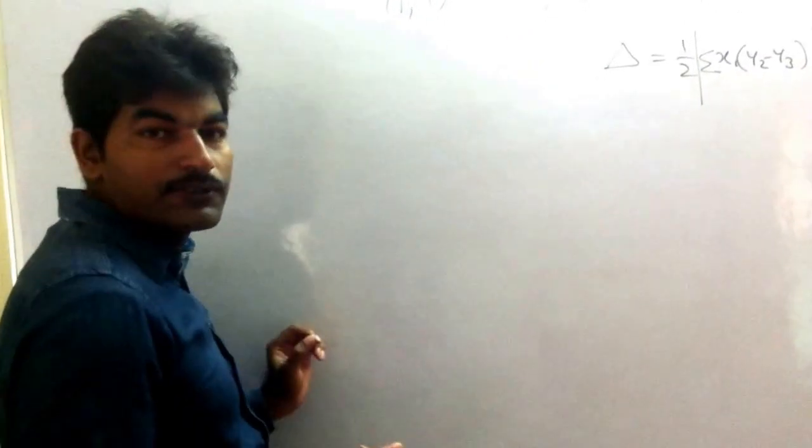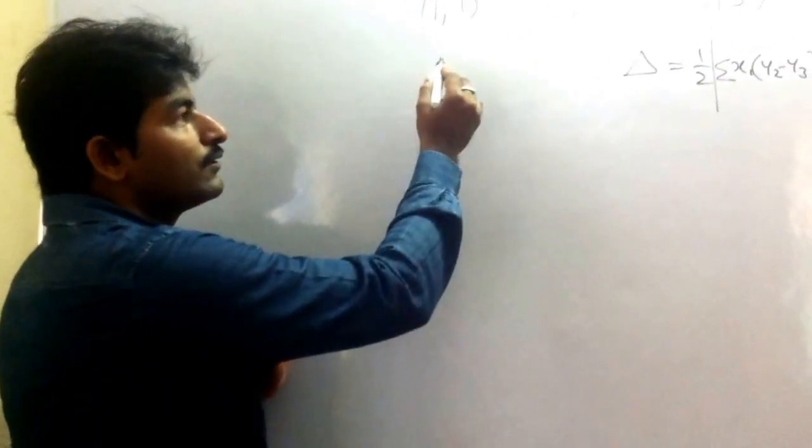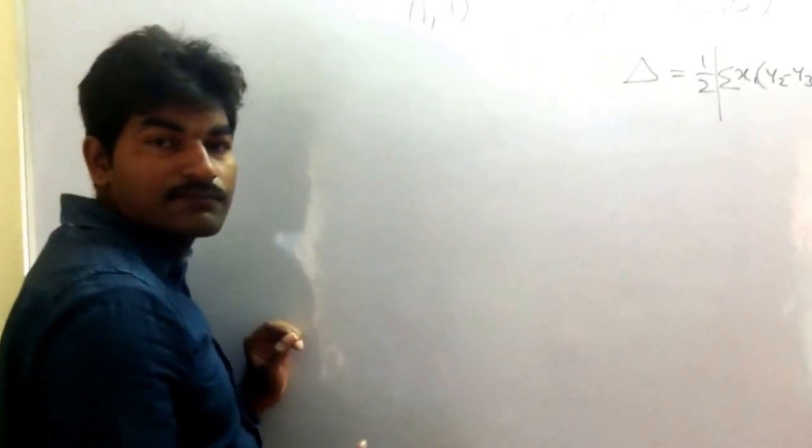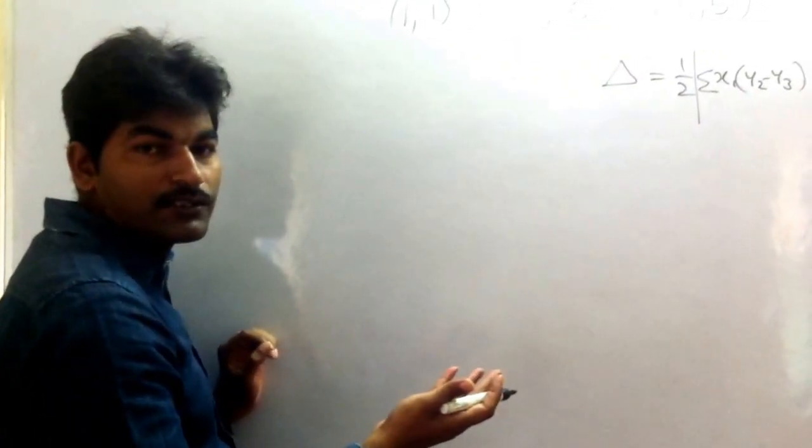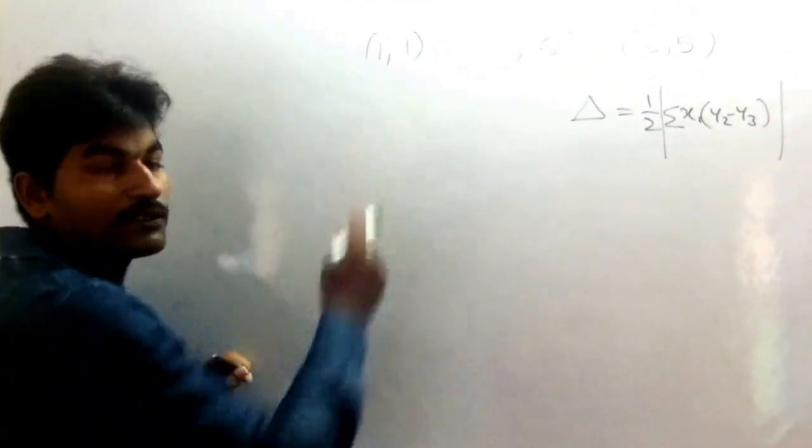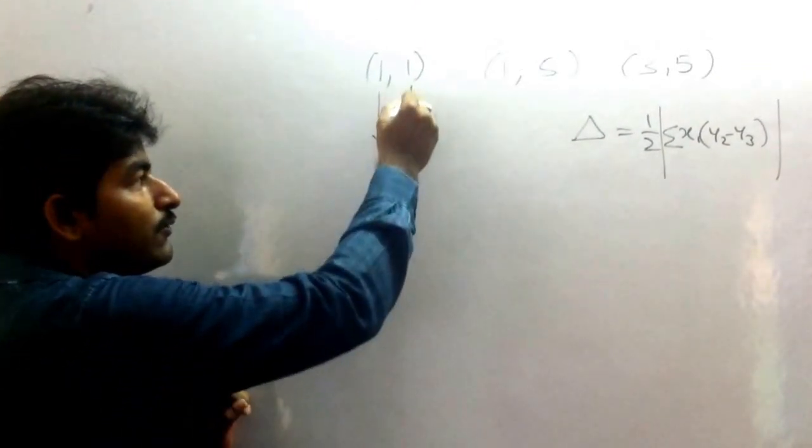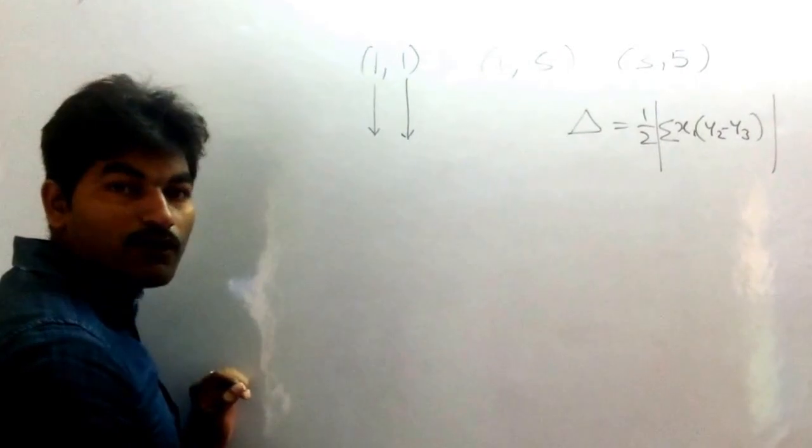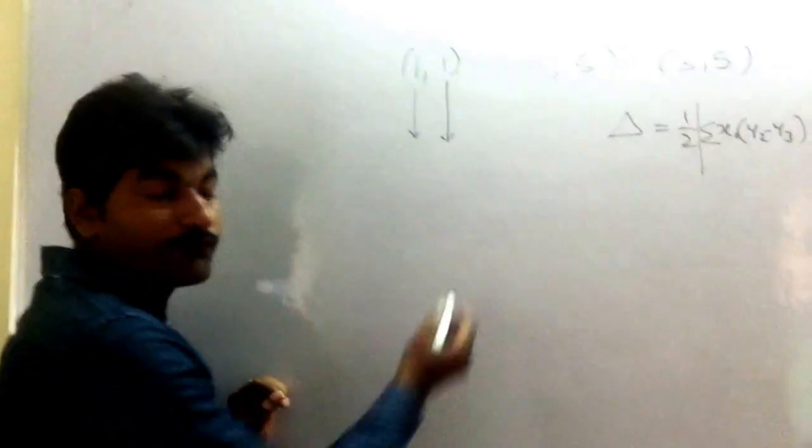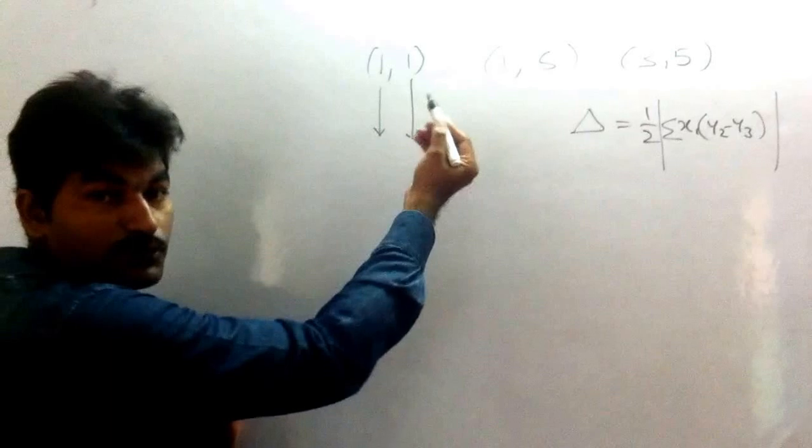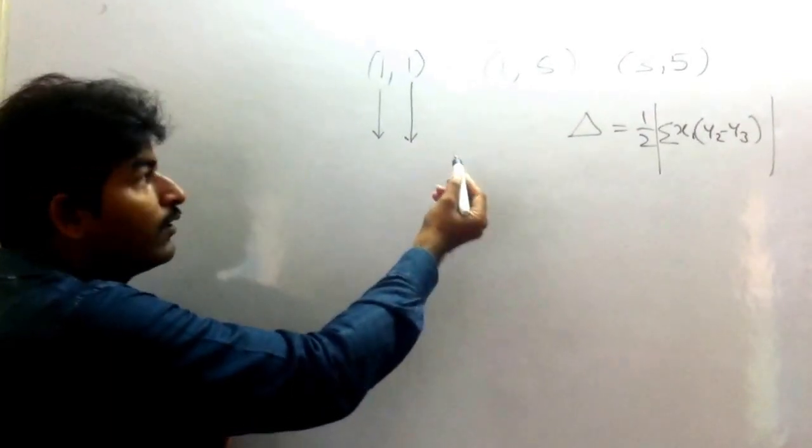First of all, what do we have to do? You have to select one of these vertices. You can choose any one. I choose the first one. You have to shift this point to origin - shift your chosen point to origin. You have to make this point (0,0).